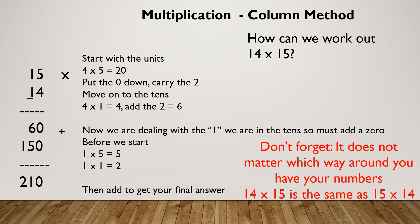Let's do another one so you can see step by step. This time let's do 32 times by 12. I'm going to start with my units: two times two is four, two times three is six. I've finished with my two, so I move on to my one, which is in the tens column. First I pop a zero down. One times two is two, one times three is three. Then I add these together: four plus zero is four, six plus two is eight, and three on its own is three — giving 384.